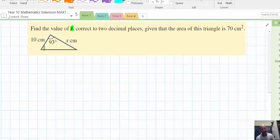Quick example. Find the value of X, which is that side there, correct to two decimal places, given that the area is 70. So, the area is actually given. So, if we, let's name these here. So, we've got, I'm just going to call that, instead of X, well, let's call it X, Y and Z.